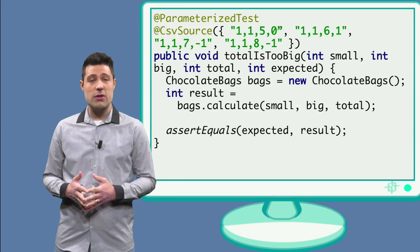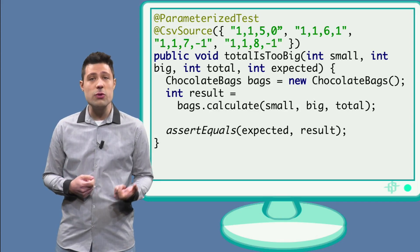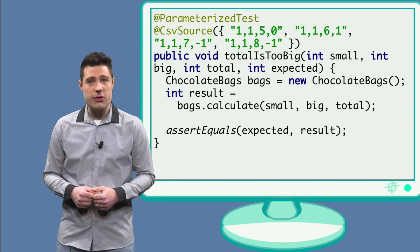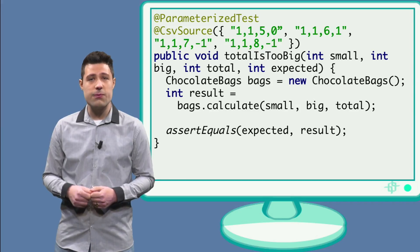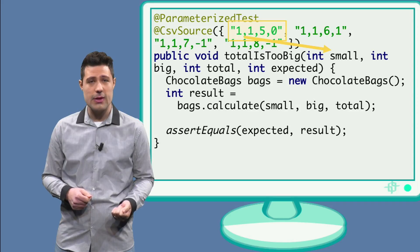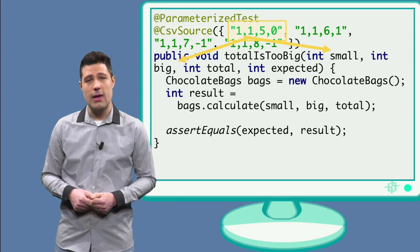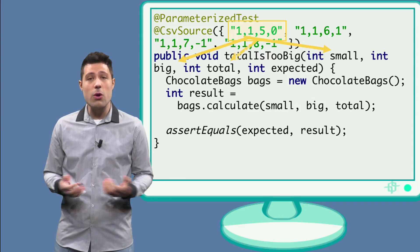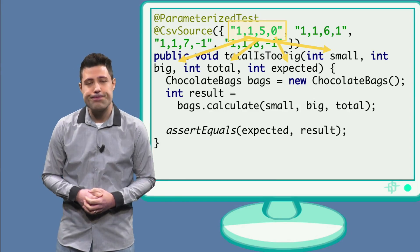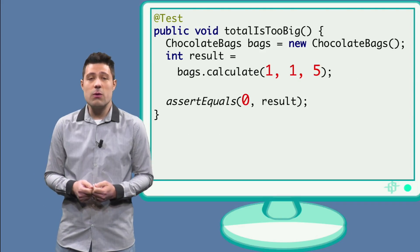When we run this test, JUnit will get each of the strings, parse it, and then invoke the totalIs2big test method, passing each of the values as parameter. For example, for the first execution, JUnit will take the first string and then send the first value, 1, to the small parameter. The second value, also 1, to the big parameter. And the third value, 5, to the total parameter. And the fourth parameter, 0, to the expected parameter. That would be the same as executing a normal JUnit test with the concrete parameters.